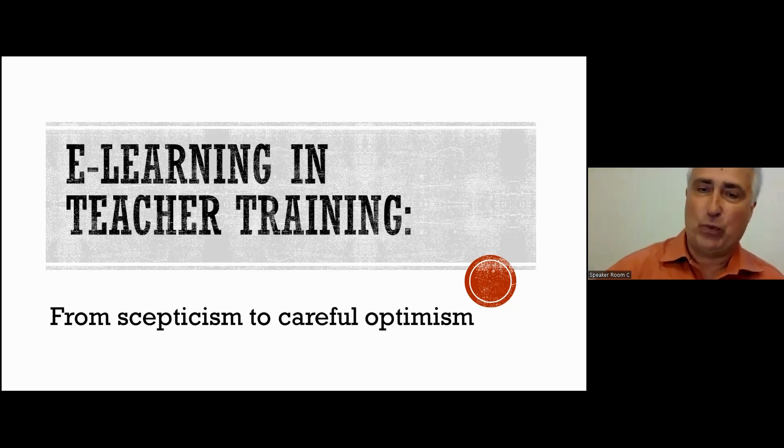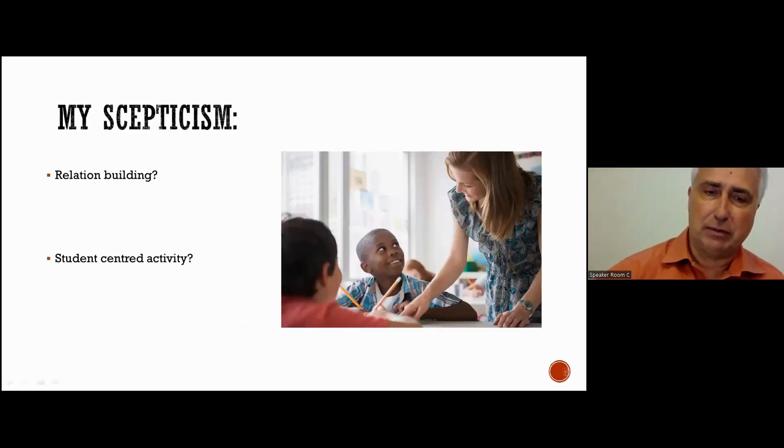So where does my skepticism come from? Number one, how about relationships? I think relationship is maybe the most important competence for a teacher to have. And how can I be able to create a role model for my students when they're following a screen? To me, it doesn't make sense. So that's a challenge for me. I was very skeptical. How can you pull this off in e-learning?